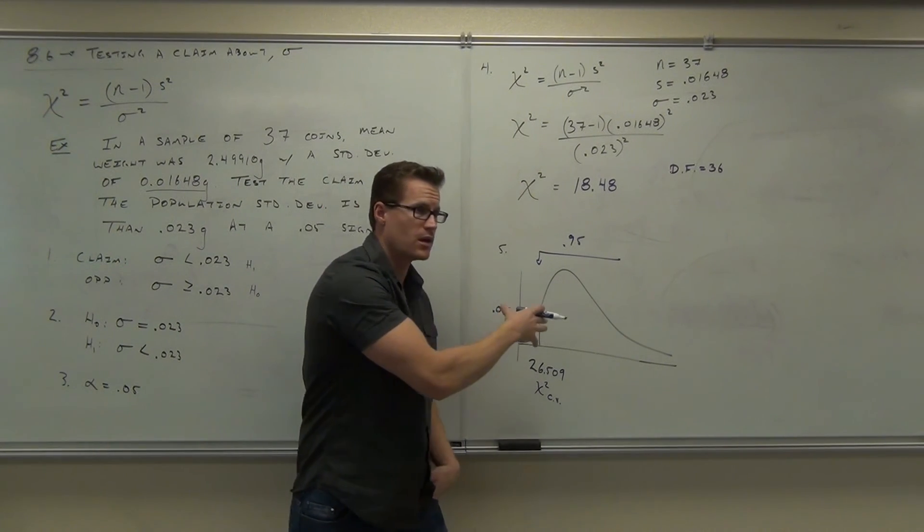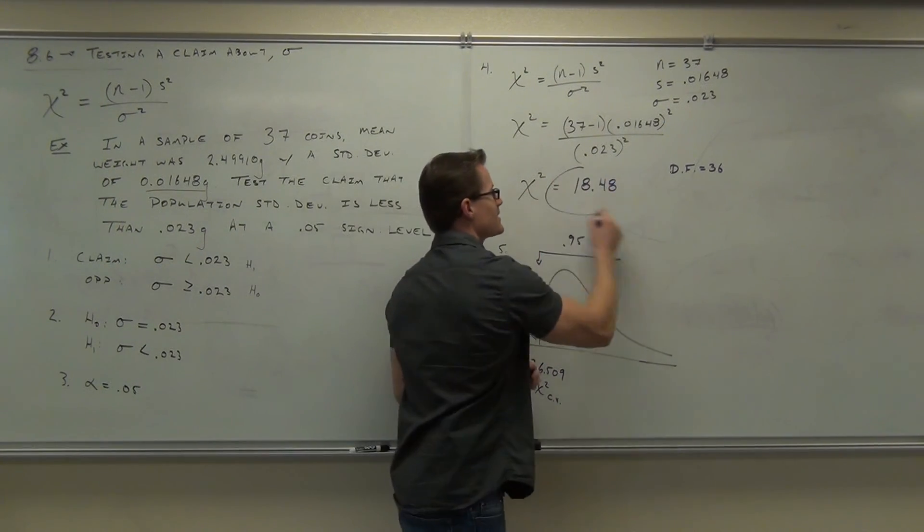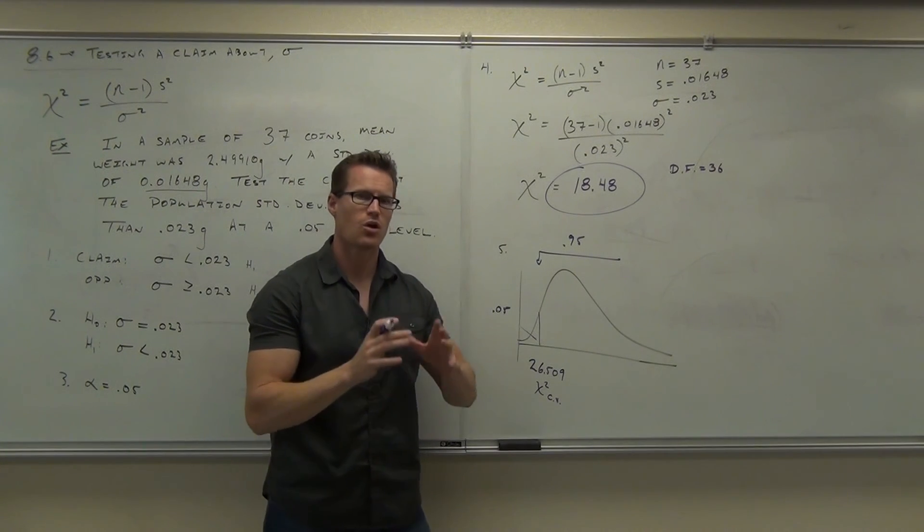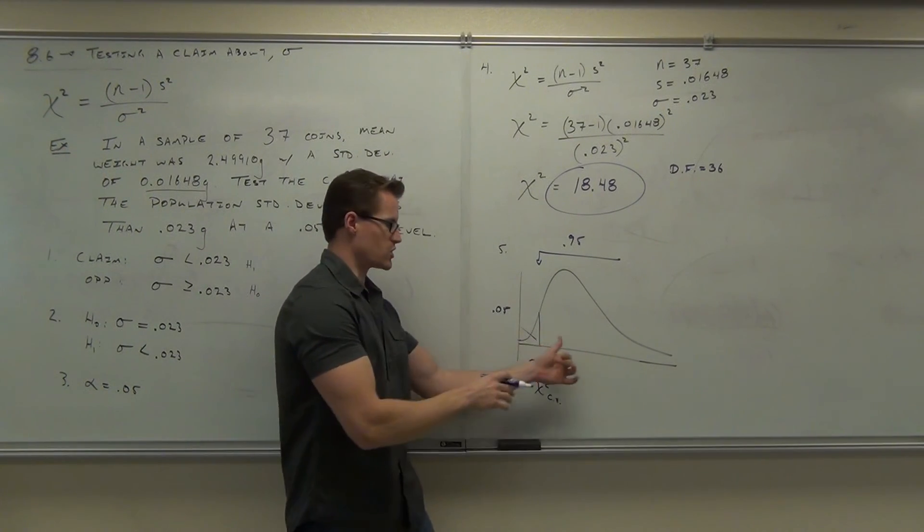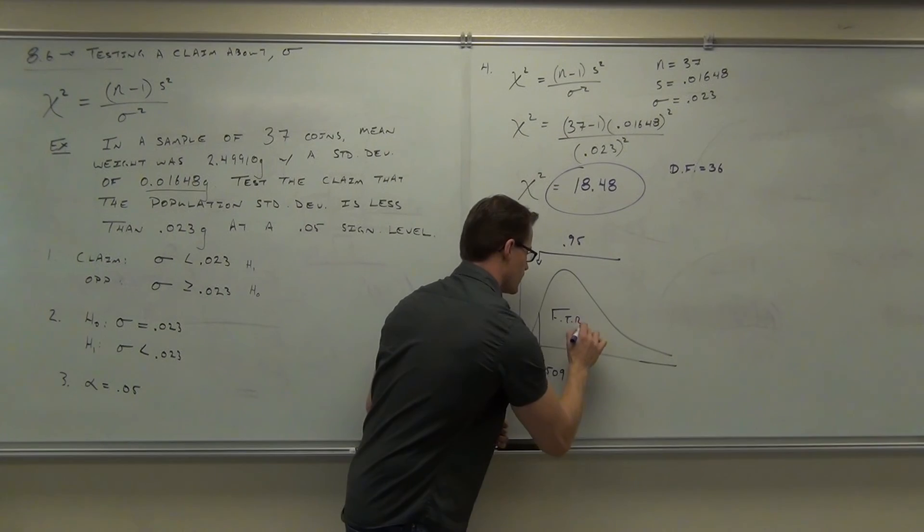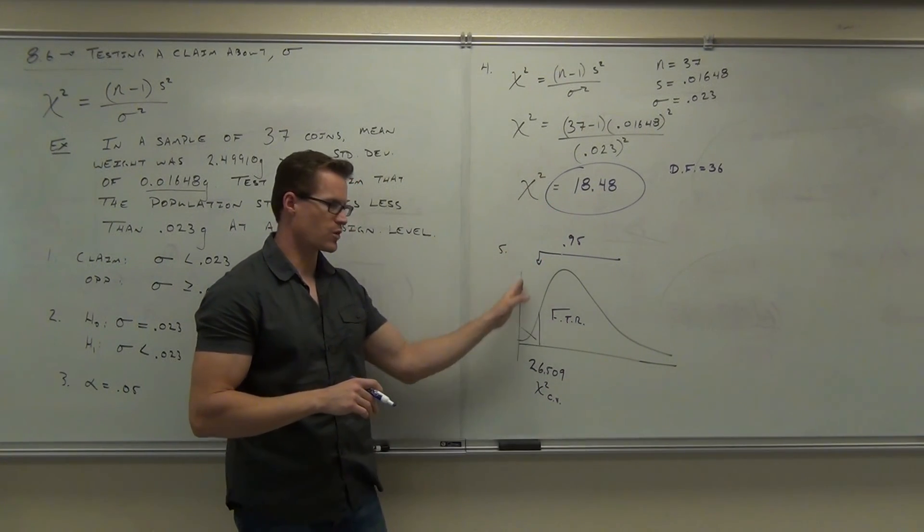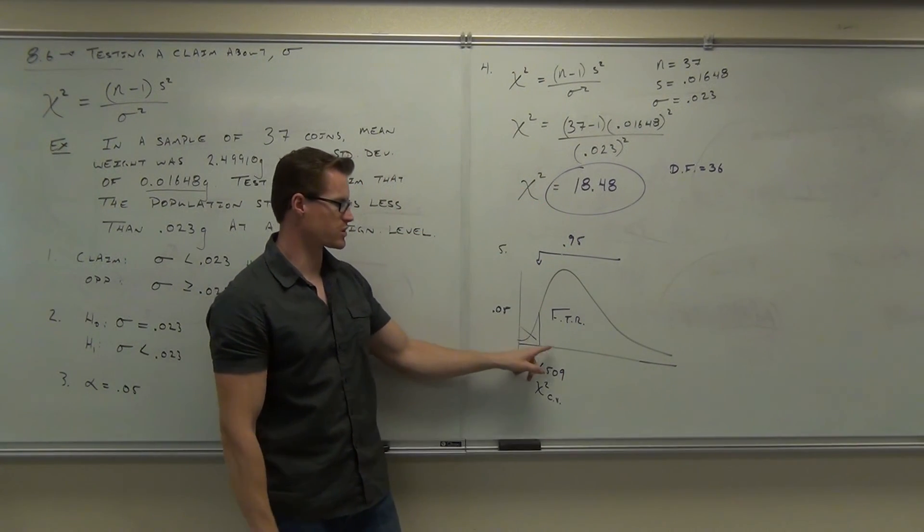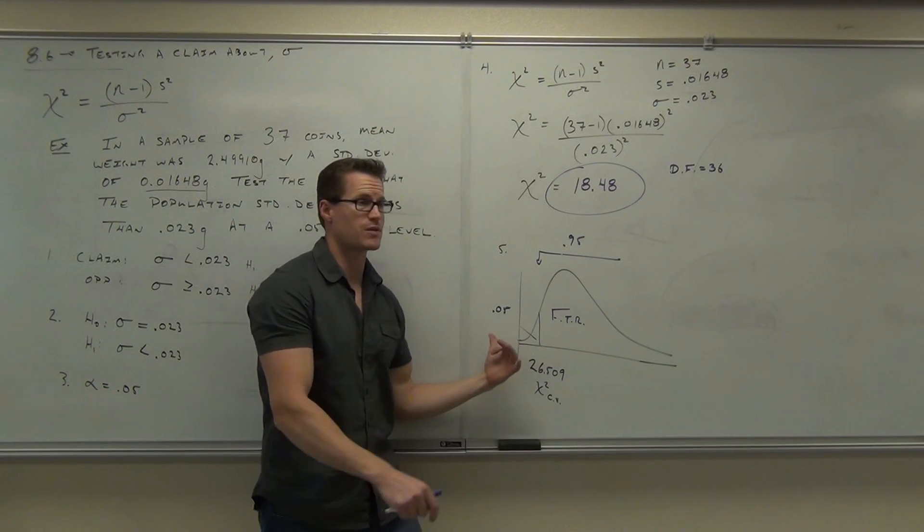It should look really familiar pictorially as our last hypothesis test. We have a left tail, right tail, two tail test. We've got a critical value here. We've got a test statistic here. Now, tell me this as the last thing we're going to talk about. This goes from 0 to infinity. Does it fall in the rejection or the failed to reject? This goes 26, 27, 28, 29, 30. That's right here.